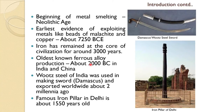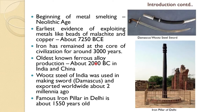The iron age remained at the core of civilization for around 3000 years. The oldest known ferrous alloy production was about 2000 BC, and probably even earlier — in India it is about 3000 BC. The wootz steel of India is one of the main important iron processes known, used in making the Damascus sword and exported worldwide about 2000 years ago.